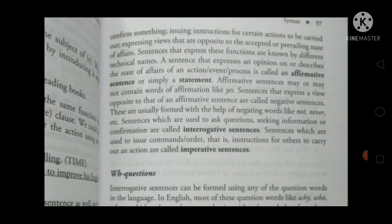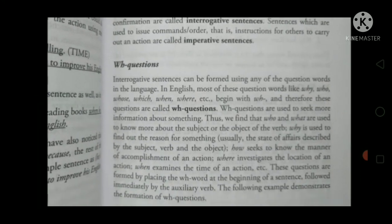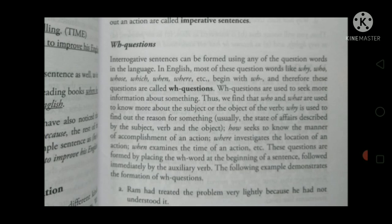WH-questions — you have already learned these at the 10th and 12th level; in fact, I think you have learned them since the fifth or sixth standard. Interrogative sentences can be formed using any of the question words in the language. In English, most question words like 'why', 'who', 'whose', 'which', 'where', and 'when' begin with 'wh', and therefore these questions are called WH-questions.